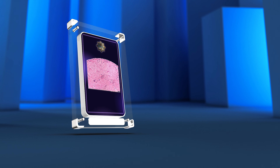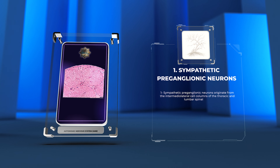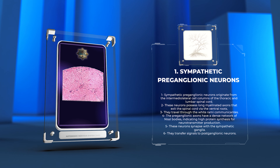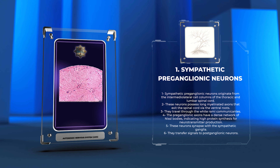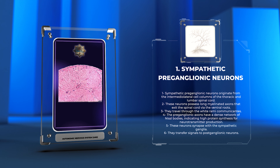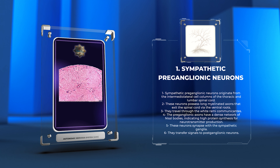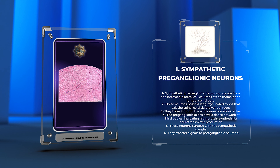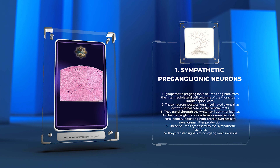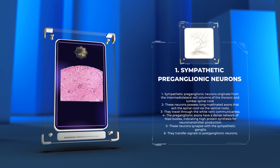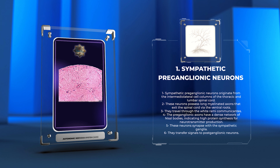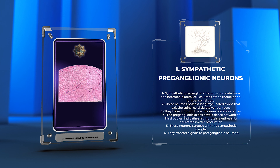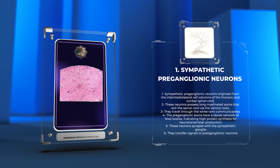Sympathetic preganglionic neurons originate from the intermediolateral cell columns of the thoracic and lumbar spinal cord. These neurons possess long myelinated axons that exit the spinal cord via the ventral roots and travel through the white rami communicantes. Within these preganglionic axons, we observe a dense network of Nissl bodies, indicating a high level of protein synthesis required for neurotransmitter production. These neurons synapse with the sympathetic ganglia, where they transfer signals to postganglionic neurons.